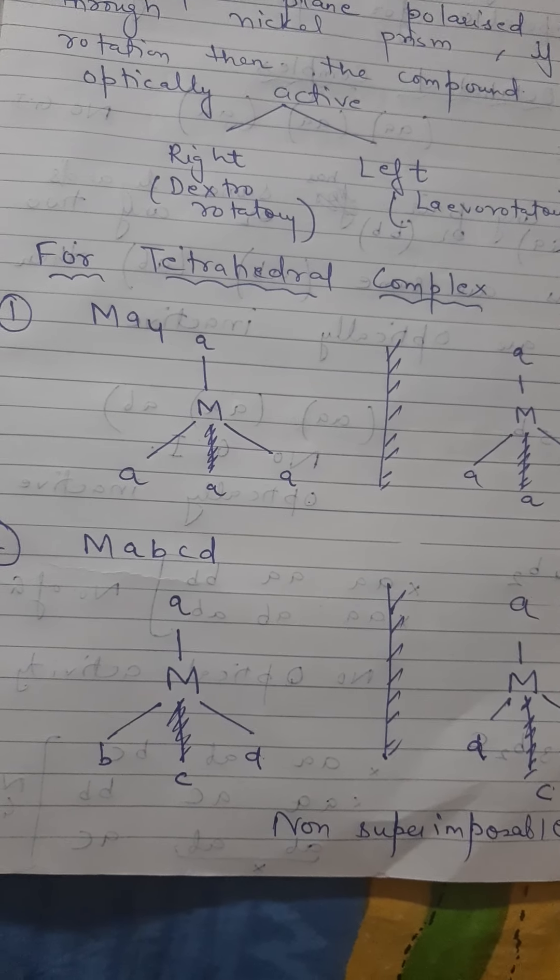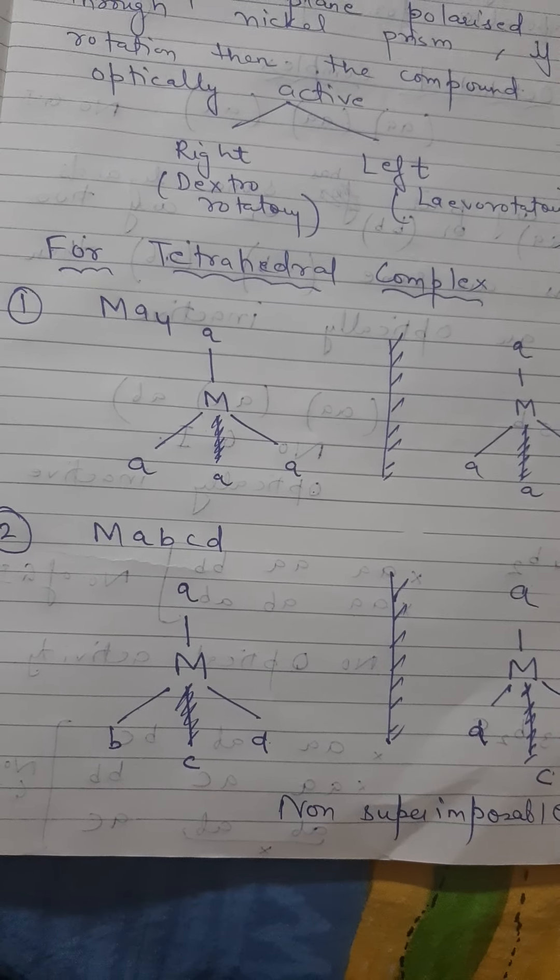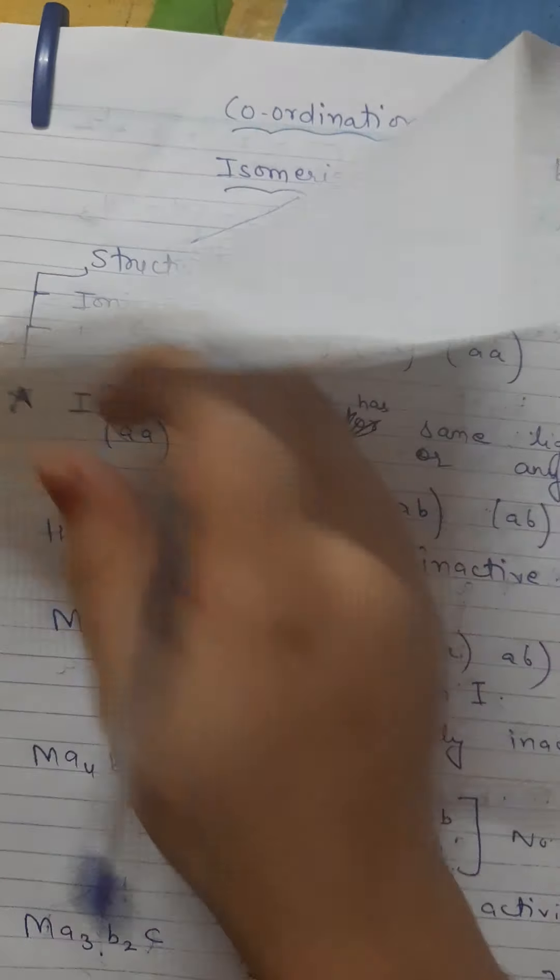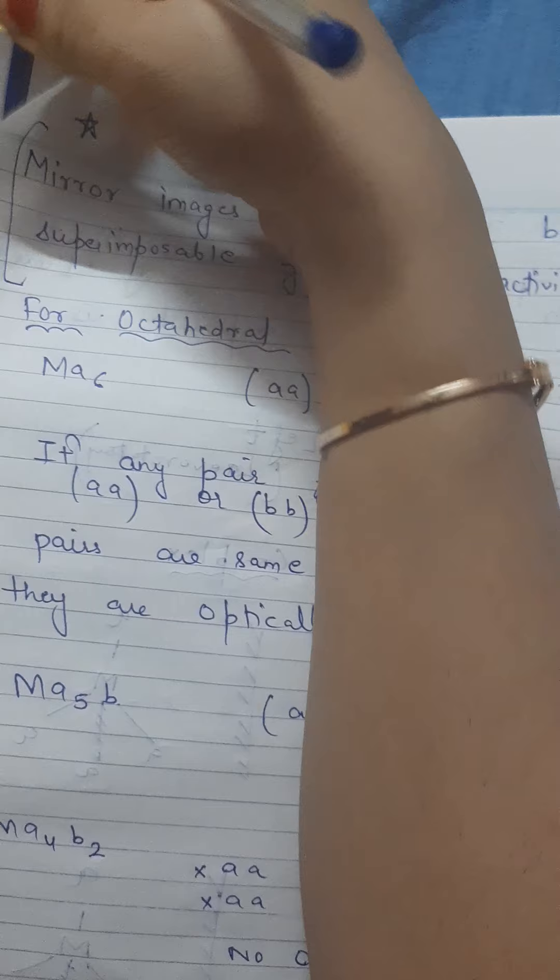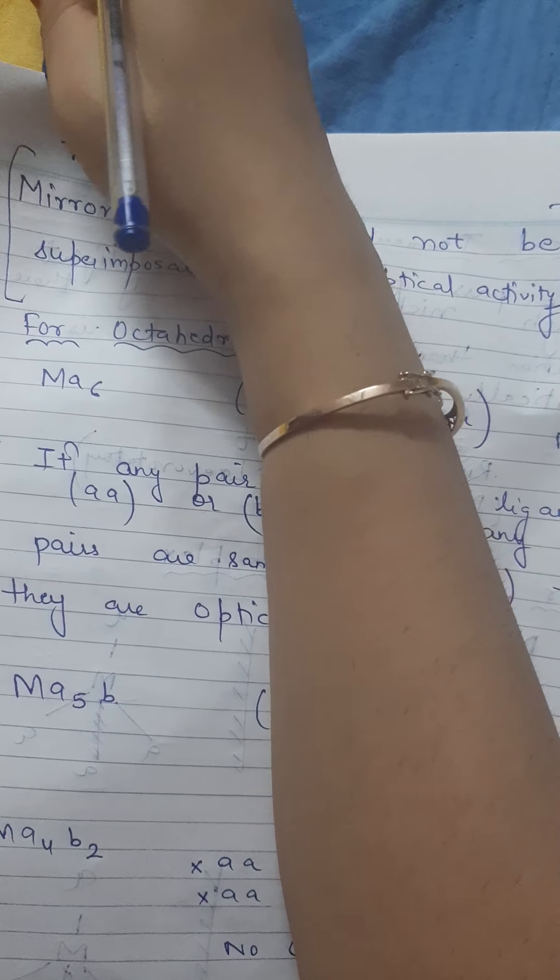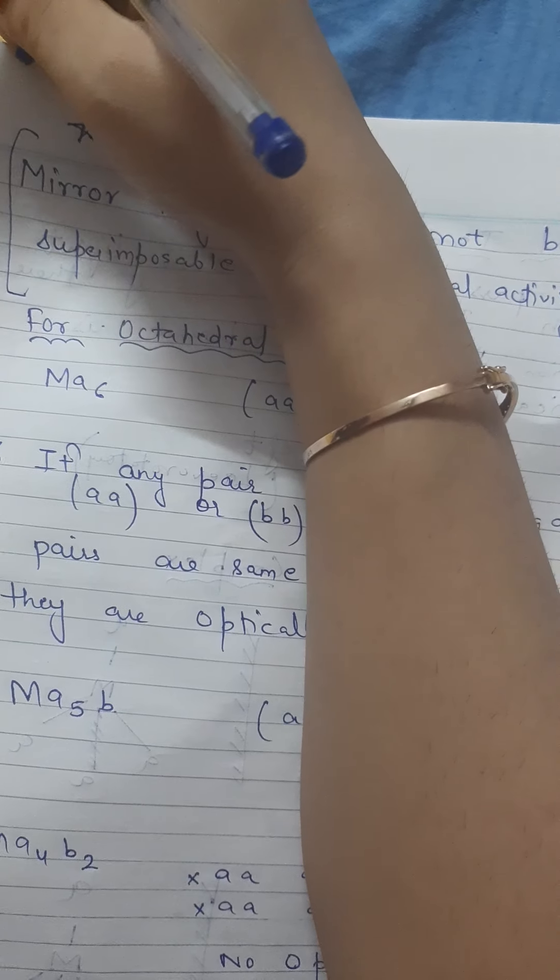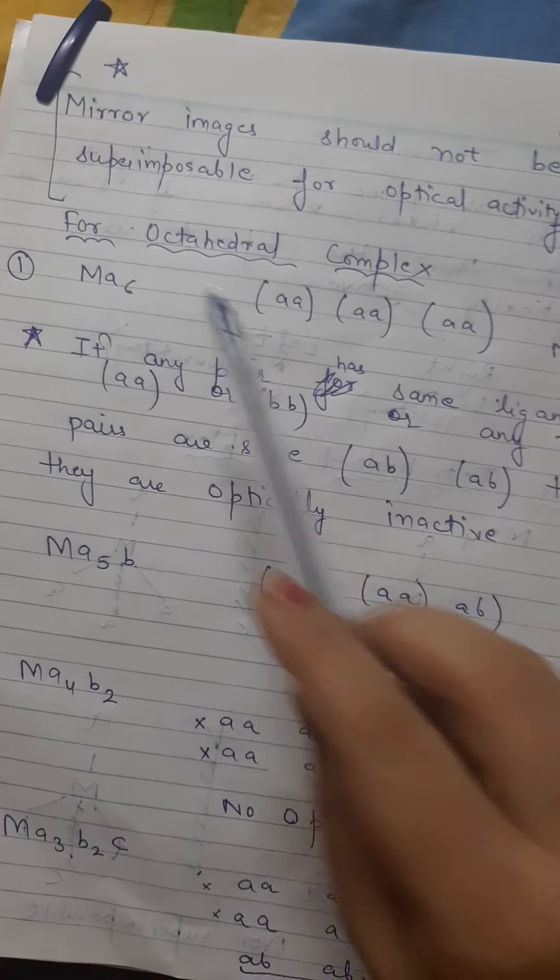The trick that we have learned is mirror images should not be superimposable for optical activity. Now for octahedral complex, you can see that there are six components. We are discussing four octahedral complexes. There are six components, so there are six possibilities.